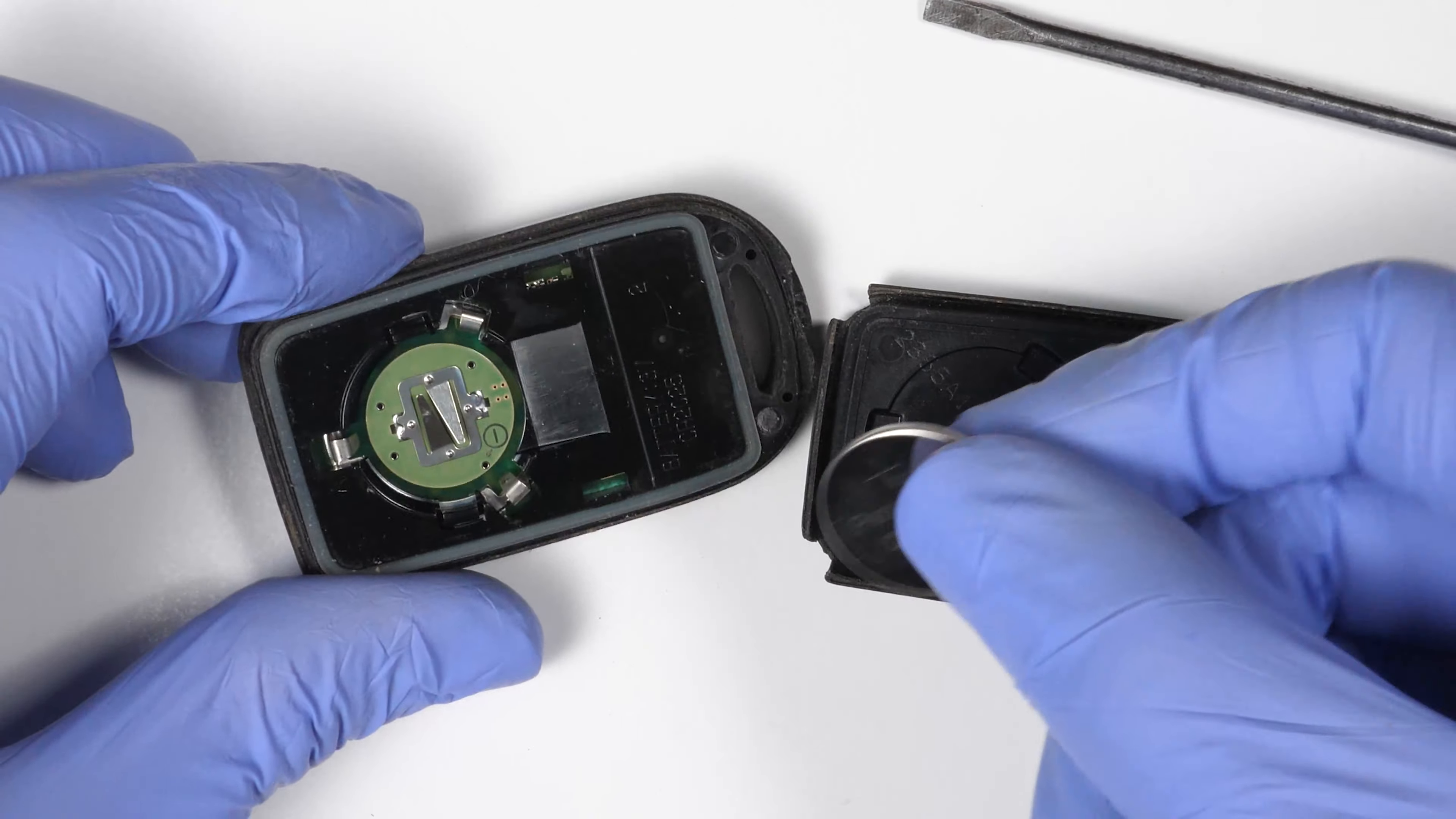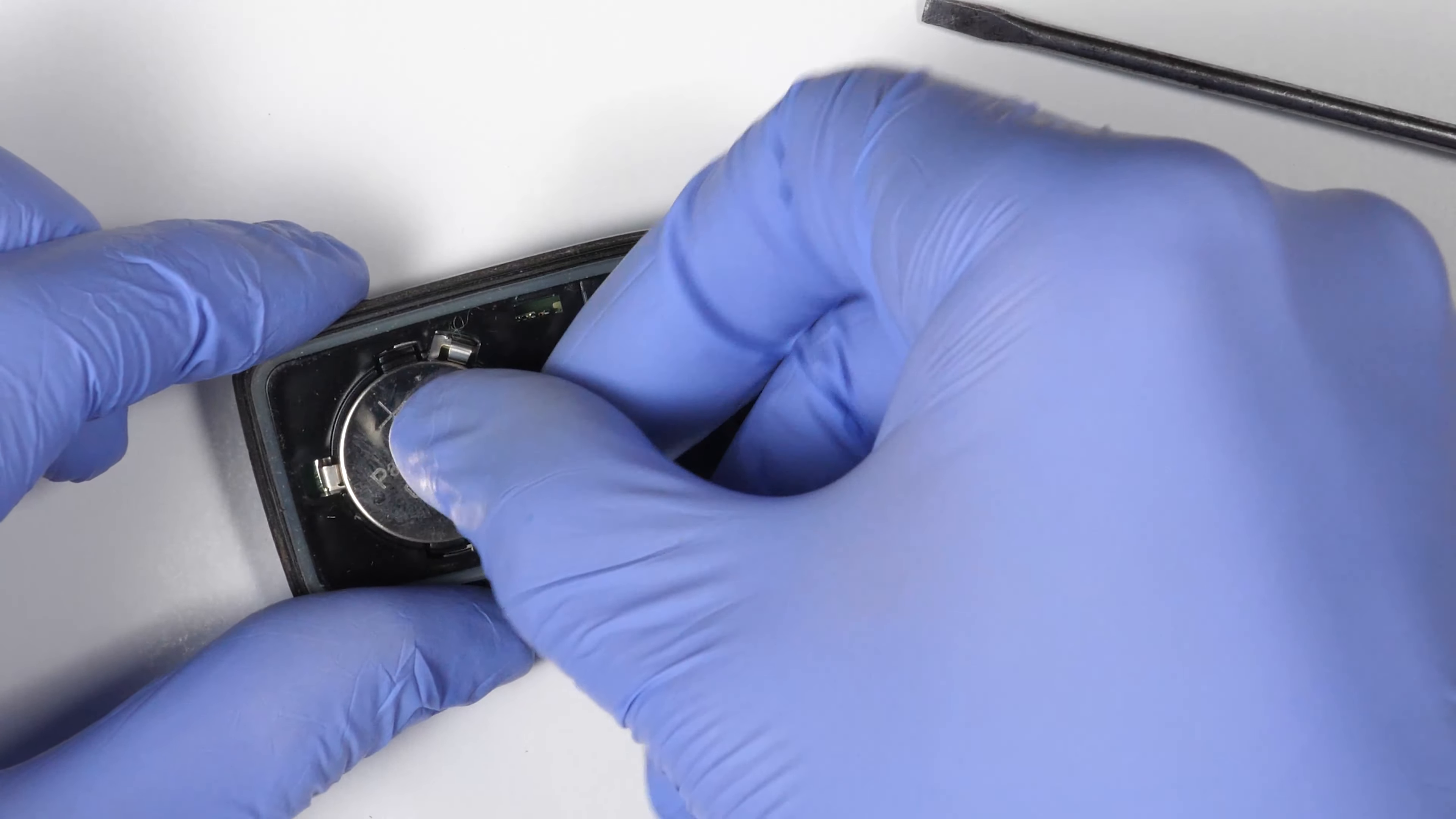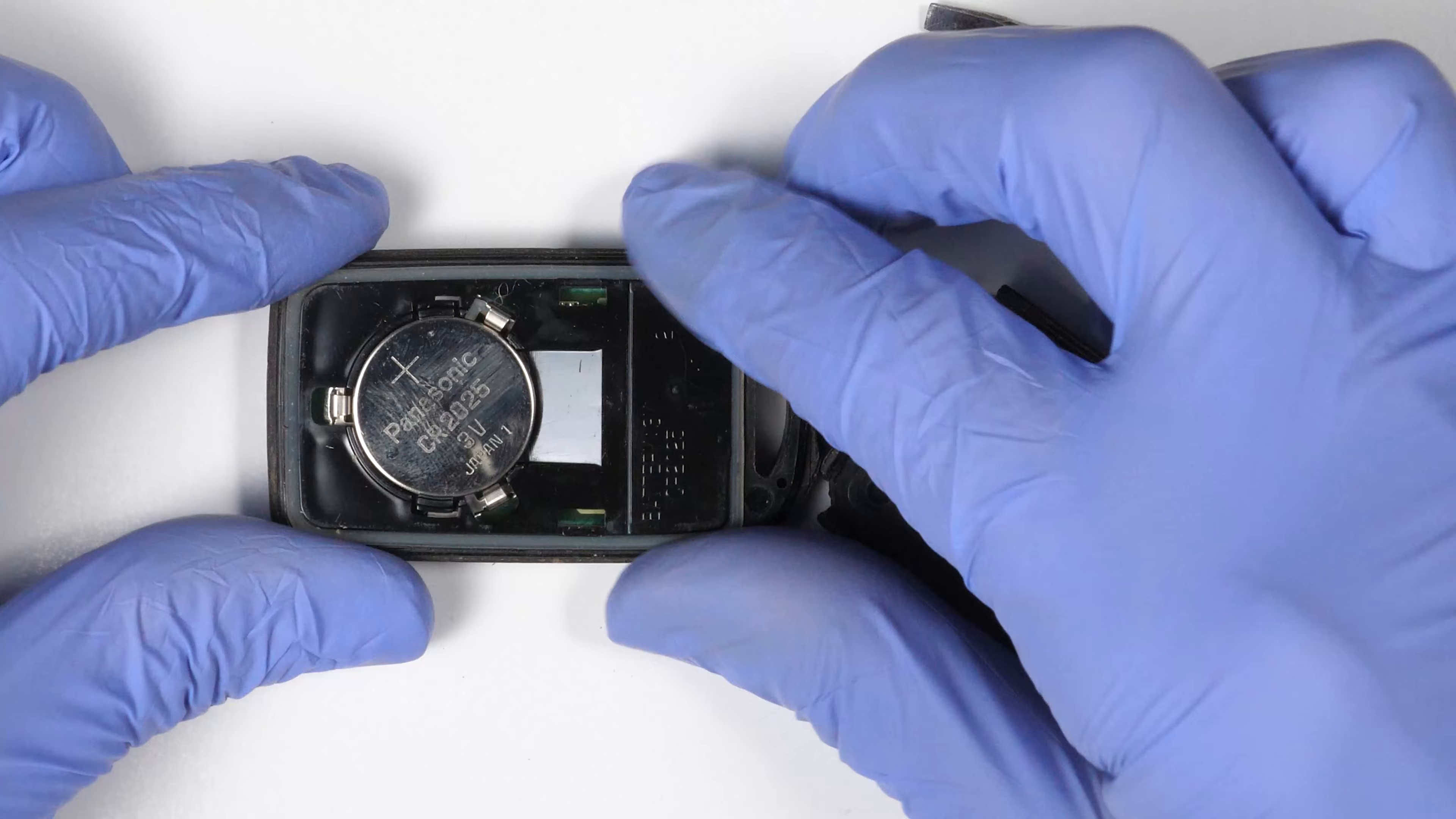Now get a new one and make sure that the positive side, the side where there's a small plus sign, is facing up. To put it back is really easy—you just need to push it back in place right there.